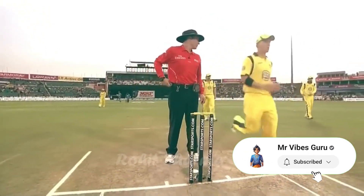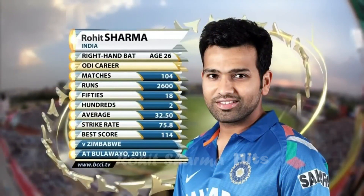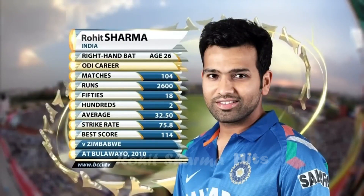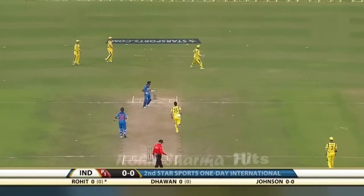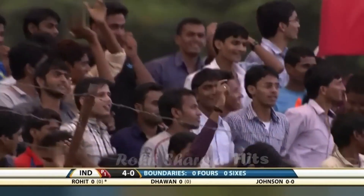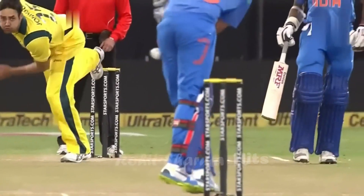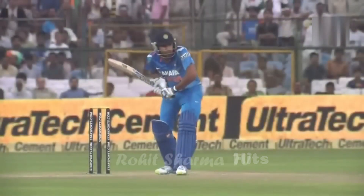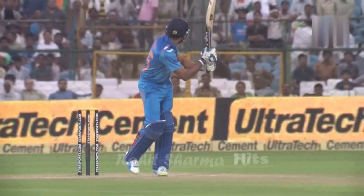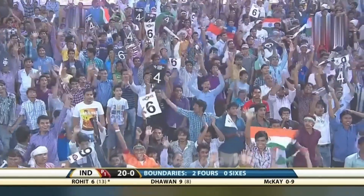Rohit Sharma and Shikhar Dhawan are the two batsmen out there for the Indians. The target is a really big one and they'll need to fire — strike rate required is 75.8. Rohit Sharma starts off with a boundary, in fact a leg-bye signal, so four on the board. There's just a little bit of light swing but unfortunately for Australia it's not the start they wanted. Rohit Sharma goes after it hard and gets it away to the boundary. India need a good start.